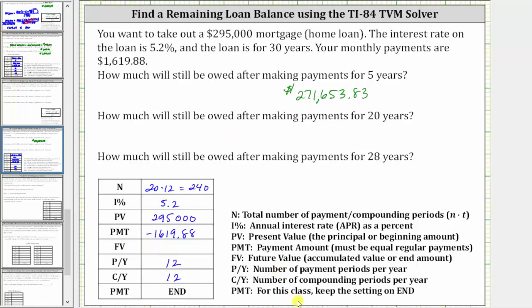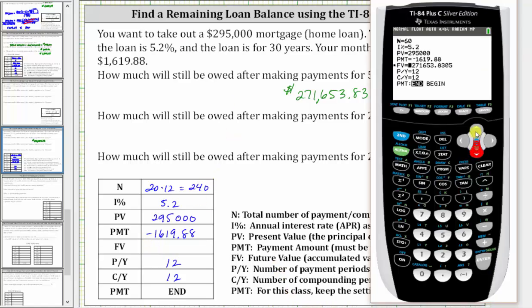Going back to the TVM solver, we go up to capital N and change this to 240. We can also just enter 20 times 12 if we want — once we press enter, it calculates the product. Then we go back down to FV for future value and press alpha, enter to solve. Again, notice how it's still negative because you still owe this amount. The future value is $151,324.40 to the nearest cent.